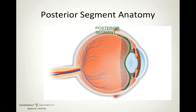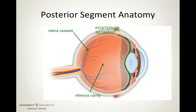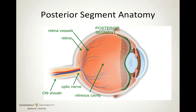Let's review the anatomy of the posterior segment. The posterior segment represents the structures behind the lens, which begins with the anterior hyaloid face marked by the curvy green line. It includes the vitreous cavity, where vitreous humor provides cushion for the eye; the retinal vessels; the retina, the peach-yellow layer lining the wall of the eye providing photoreceptor cells to process light; and the optic nerve and its dural sheath, the cable of fibers that carries visual information to the brain.